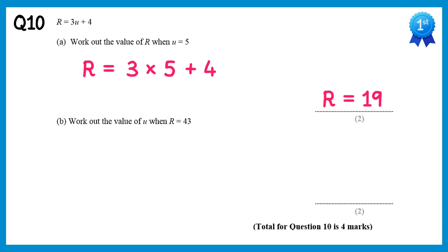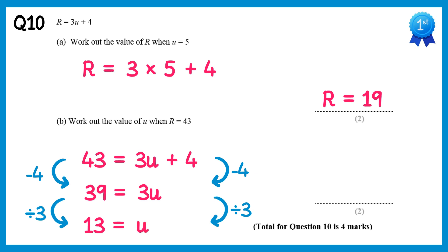For the next one we're told that r is 43, and we need to find u. So r equals, which is 43 equals, 3u plus 4. We now have an equation to solve. If we take away 4 from both sides, on the left we'll get 39, and on the right the 4s will cancel, so we're left with 3u. Then divide both sides by 3. That will give 13 equals u, which is the answer to the question.